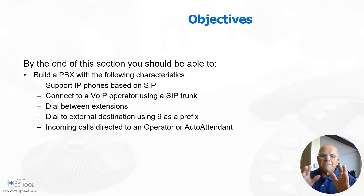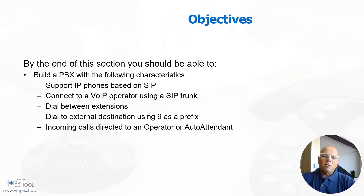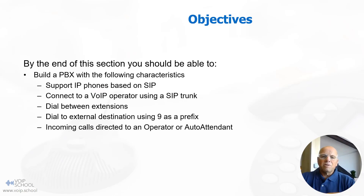The objectives for this section are to build a PBX with the following capabilities: one, support IP phones based on the SIP protocol; two, connect to a VoIP operator using a SIP trunk; three, enable dialing between extensions within the PBX; four, allow dialing to external destinations using nine as a prefix; and five, route incoming calls to an operator or auto-attendant.